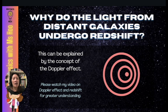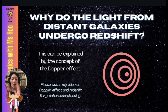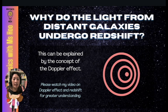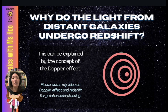Why does light from distant galaxies undergo red shift? This is explained by the concept of the Doppler effect. I'm not going to cover the Doppler effect in detail in this video, so please watch my separate video on Doppler effect and red shifting for greater understanding.